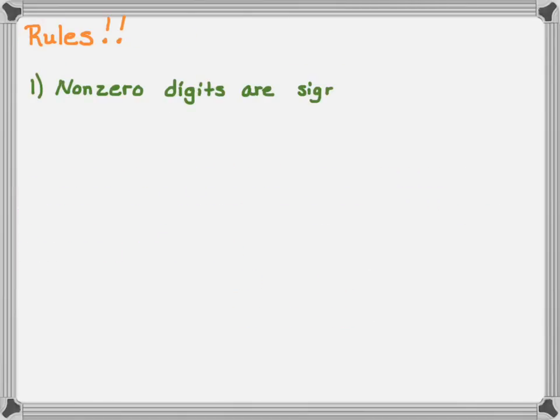Now let's talk about the rules of determining significant figures. Rule one: if it is a non-zero digit, then it is significant. So the number 1.234 has four significant figures because all the digits are non-zero and they are significant.